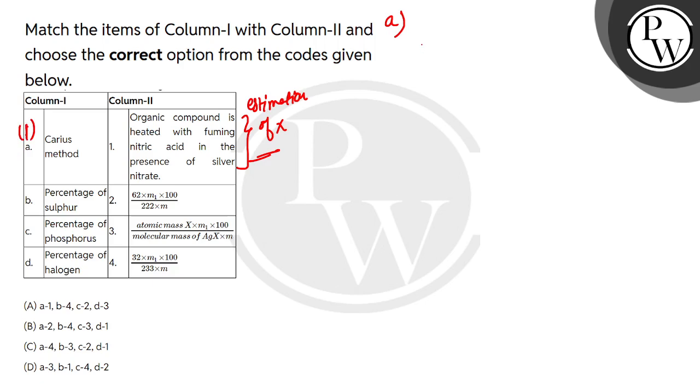The halogen is used in the form of silver halides. In B, we have written the percentage of sulfur. The percentage of sulfur, which is estimated in organic compounds, is used in barium sulfate. So the percentage of sulfur is used in the form of 32 divided by 233.